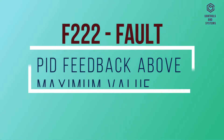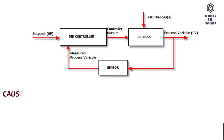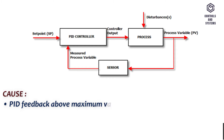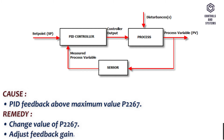F222 Fault: PID feedback above maximum value. Cause: PID feedback above maximum value P2267. Remedy: change value of P2267 and adjust feedback gain.